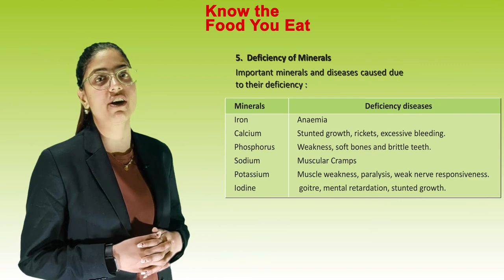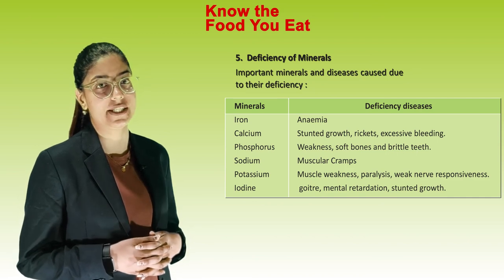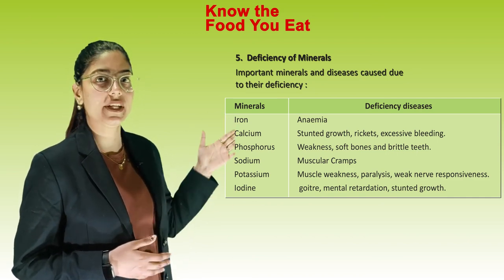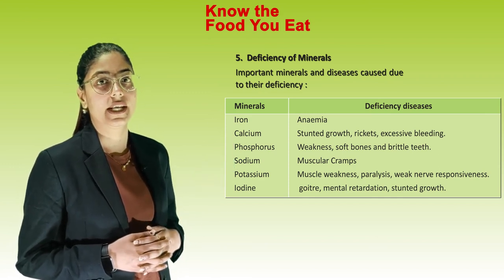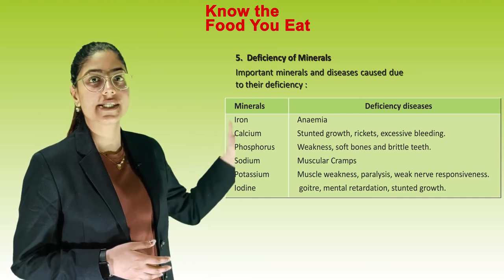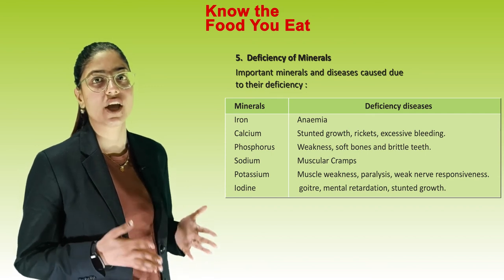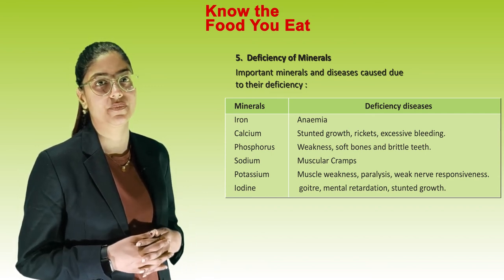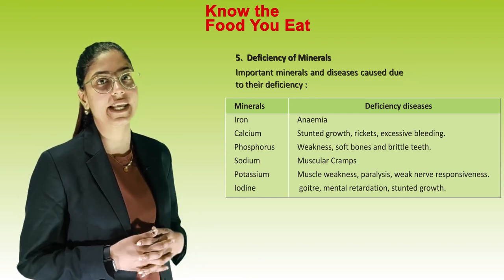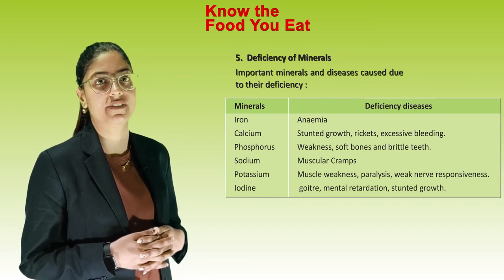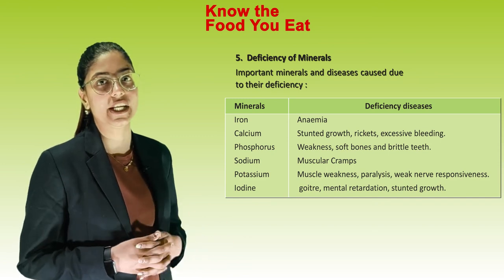Deficiency of minerals and their associated diseases: Iron — anemia. Calcium — stunted growth, rickets, excessive bleeding. Phosphorus — weakness, soft bones and brittle teeth. Sodium — muscular cramps. Potassium — muscle weakness, paralysis, weak nerve responsiveness. Iodine — goitre, mental retardation, stunted growth.